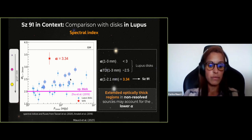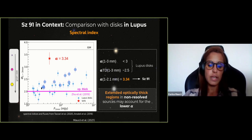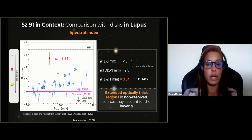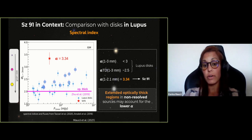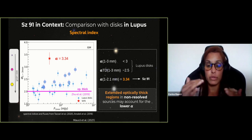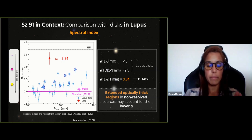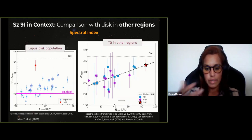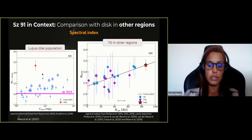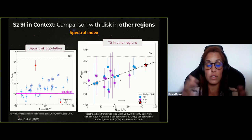One explanation for this is that extended optically thick regions in the unresolved Lupus sources — which are mostly compact small disks — produce this low spectral index. So STRAS-91's higher spectral index as a large resolved transitional disk makes sense in that context.